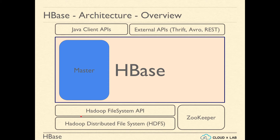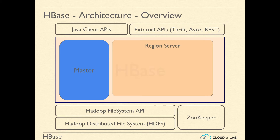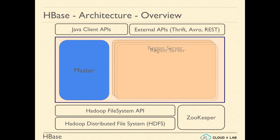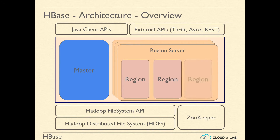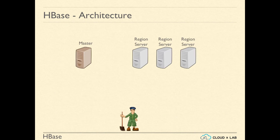HBase has a master which keeps the index of the data and multiple region servers that store the actual data. A region server has multiple regions, and each region stores part of the data table.